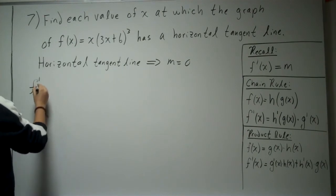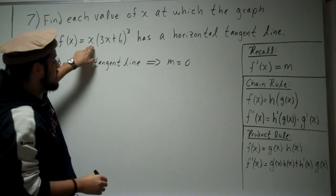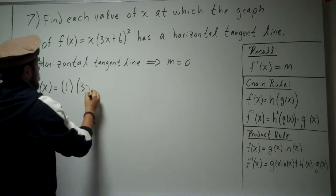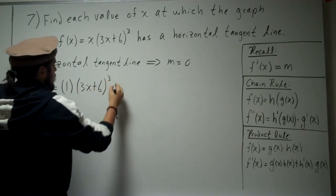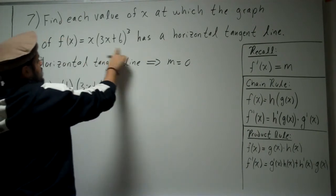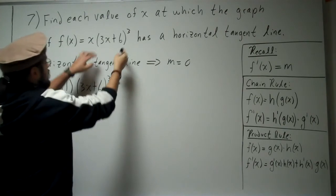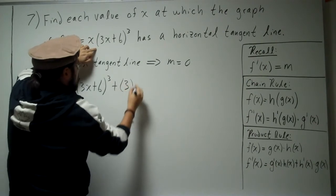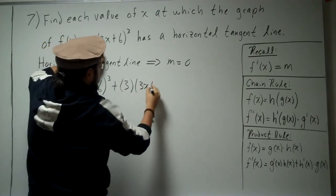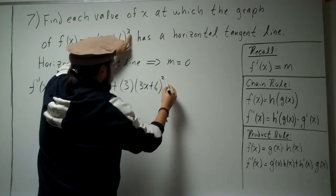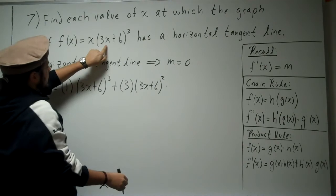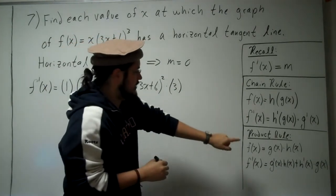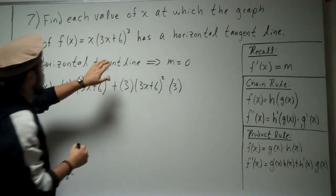Let's go ahead and take the derivative. Product rule: take the derivative of x, which is 1. So we have 1 times — keep that the same — plus, product rule, the derivative of (3x+6)³. The derivative of that uses the chain rule: take the derivative of the outer function, something cubed, which brings the 3 down, times (3x+6)², times the derivative of the inner function, which is 3. Then times g(x), which is just x.